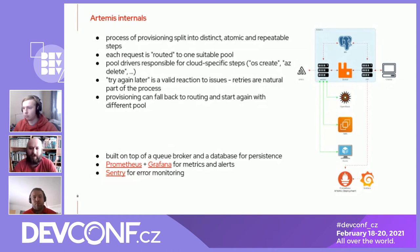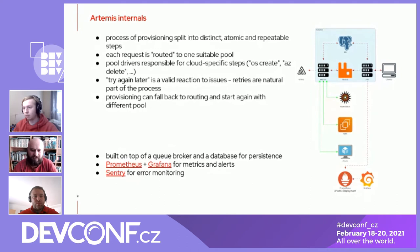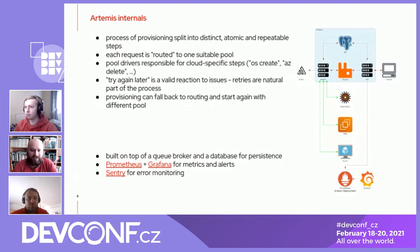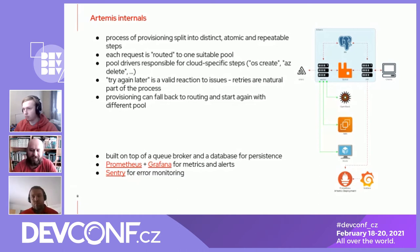With some exponential back-off, retrying is very useful for us. If we run into troubles, we can try a different pool without bothering the user behind the API. He doesn't have to be aware of any troubles and doesn't really care about the actual infrastructure used for provisioning. The service internals are built on top of a queue and a broker with an added database for persistence. It provides metrics and alerts based on a standard Prometheus and Grafana setup, and we use Sentry for monitoring because we don't like when errors slip our attention.